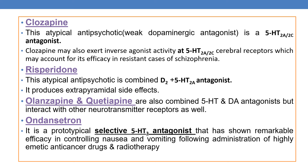Now finally coming to 5-HT3 antagonist, ondansetron. It is a prototypical selective 5-HT3 antagonist that has shown remarkable efficacy in controlling nausea and vomiting following administration of highly emetic anti-cancer drugs and radiation therapy. It is highly effective in the treatment of emesis caused by anti-cancer and radiation therapy. By this we complete the 5-HT antagonists.